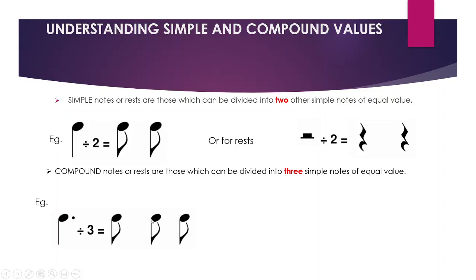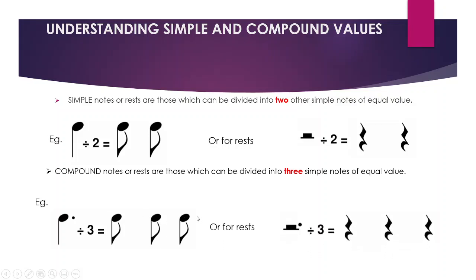The same applies to rests. A dotted minim rest splits into three because it's got the dot — so there's one, two, three crotchets.